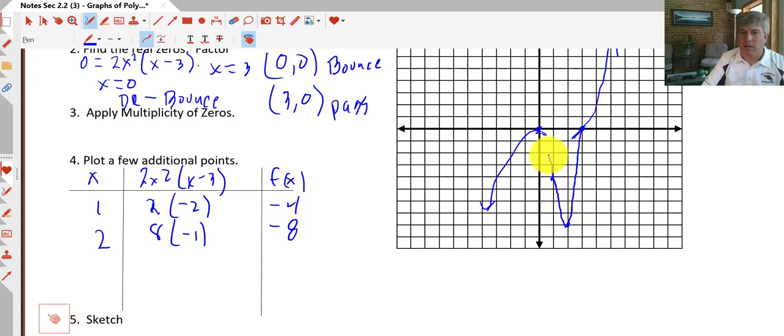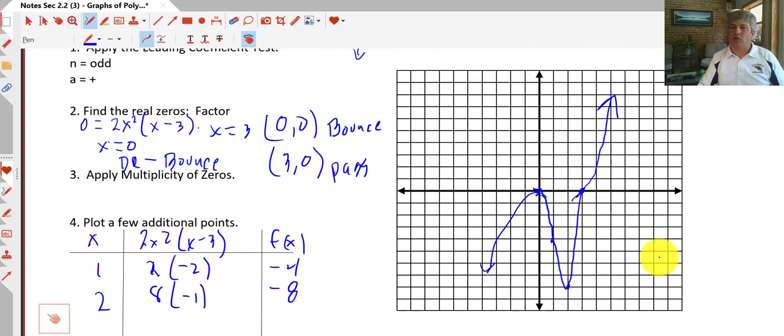So our graph looks something like that. So that dipped a lot farther than I expected it to, but there is a sketch of our cubic. So it looks like we've got a relative max here at the origin, at (0, 0), and somewhere down here, we'll have a relative minimum. Somewhere around (2, -8), we'll have a relative minimum, but we aren't asked to do that. So there is a couple of samples on how to sketch the graph of a polynomial, and we'll get some more practice with that when I see you in class.